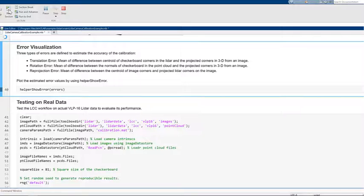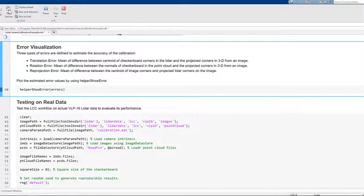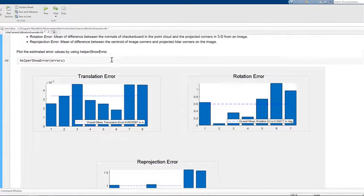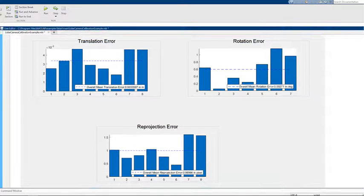We can also evaluate the calibration results by plotting calibration errors between checkerboard images and corresponding point clouds. Here we got an average translational error of 3.5 mm, average rotational error of 0.6 degree and reprojection error of around 1 pixel.